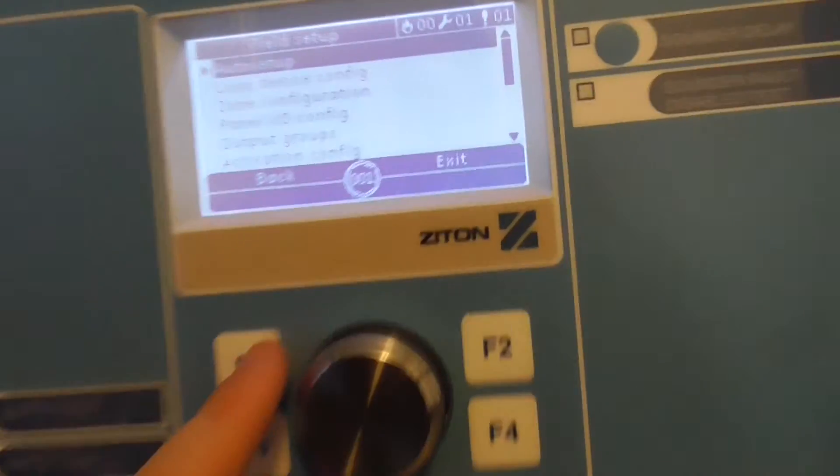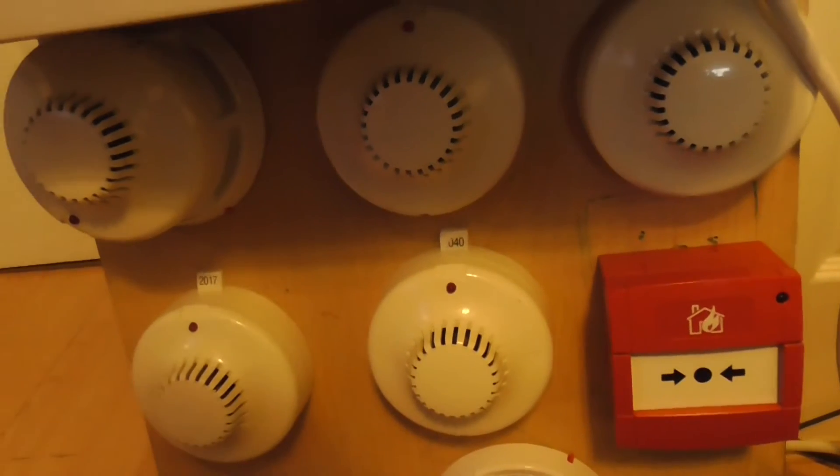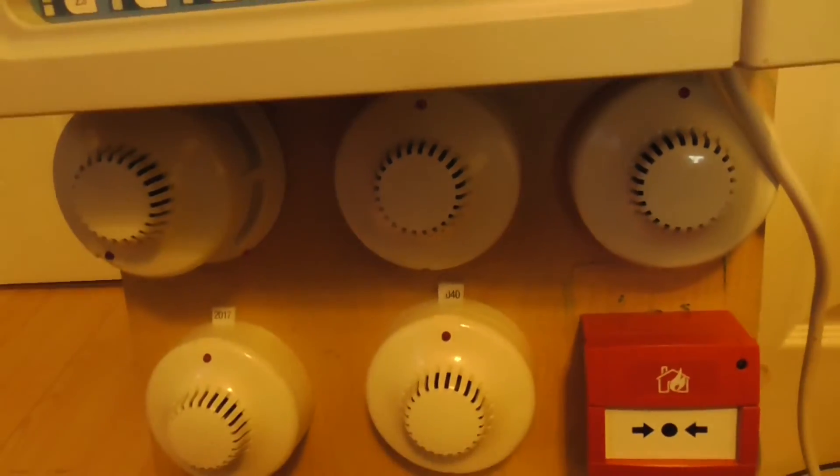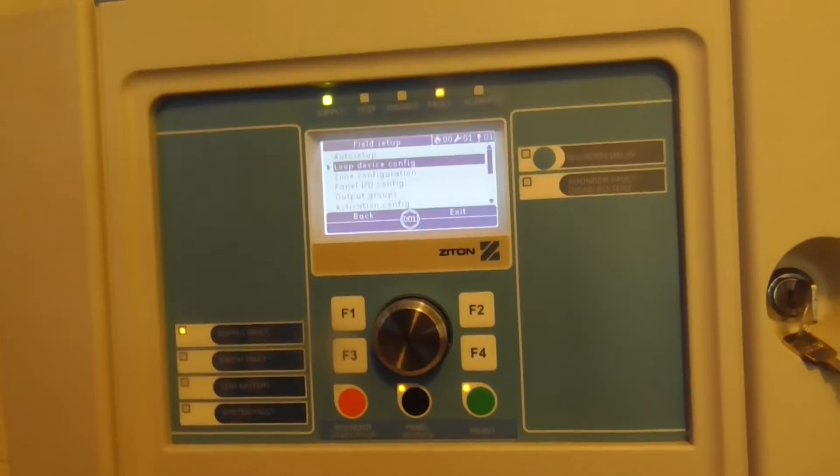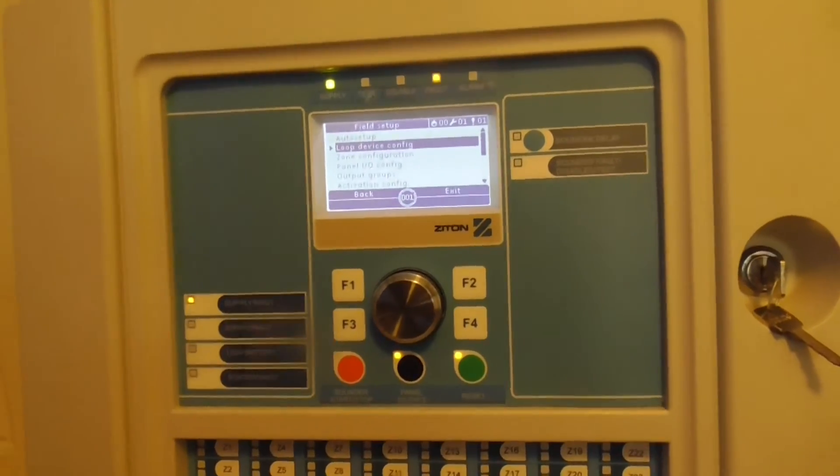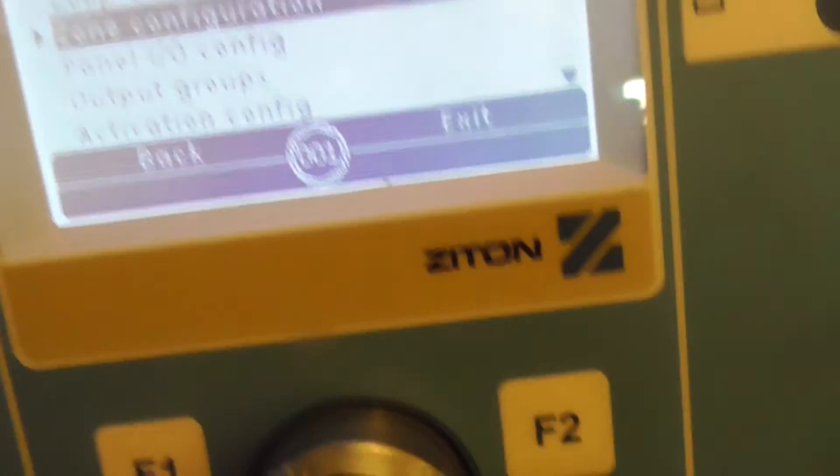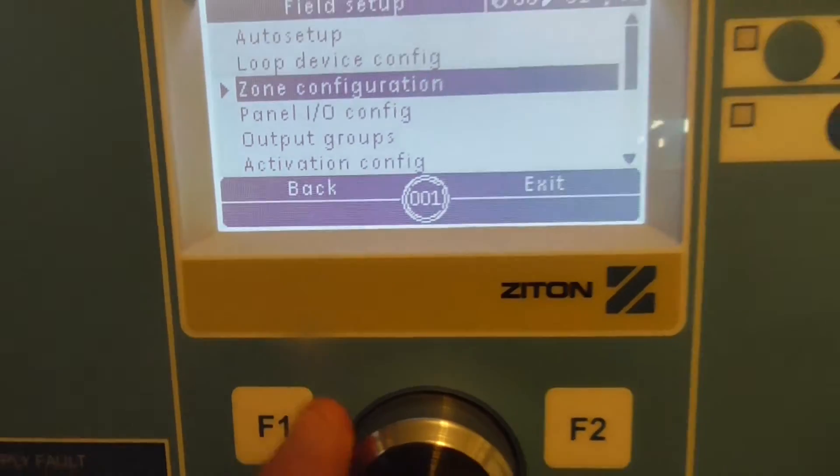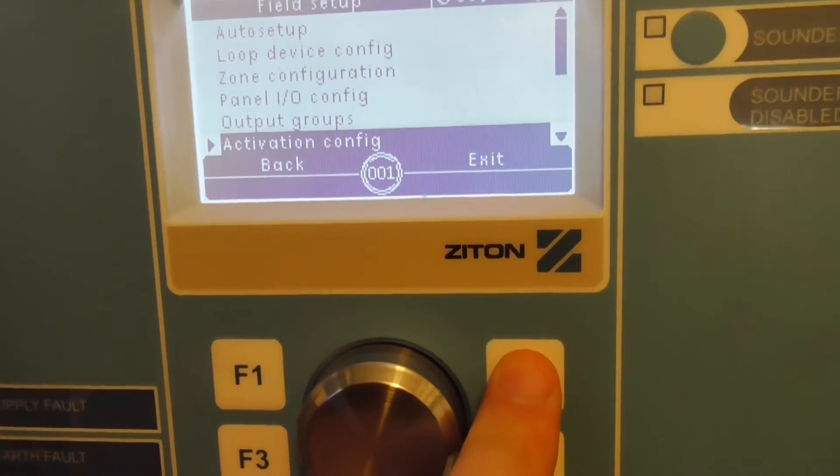In the field setup, we've got the auto setup, loop device config. I haven't put these into correct zones or anything. I think these all are in zone 1. I haven't actually played around with the sensitivity or the zones, or if they're going to day or night mode. Hopefully by the next system test, I will have sorted all this out. Zone configuration to set the devices into individual zones, inputs, outputs. That's basically it for field setup.